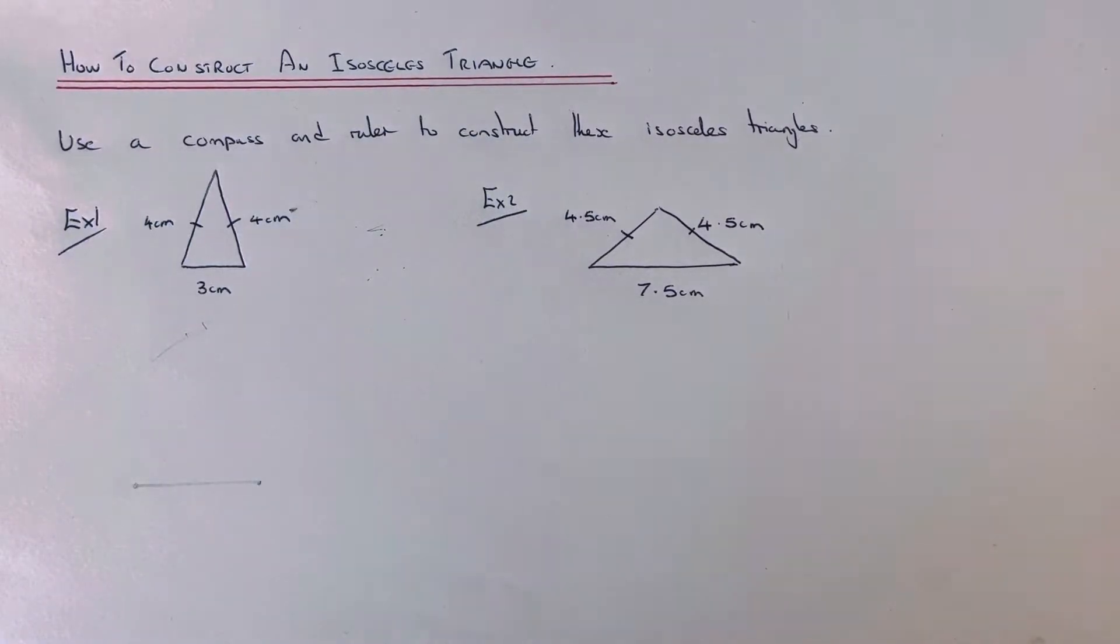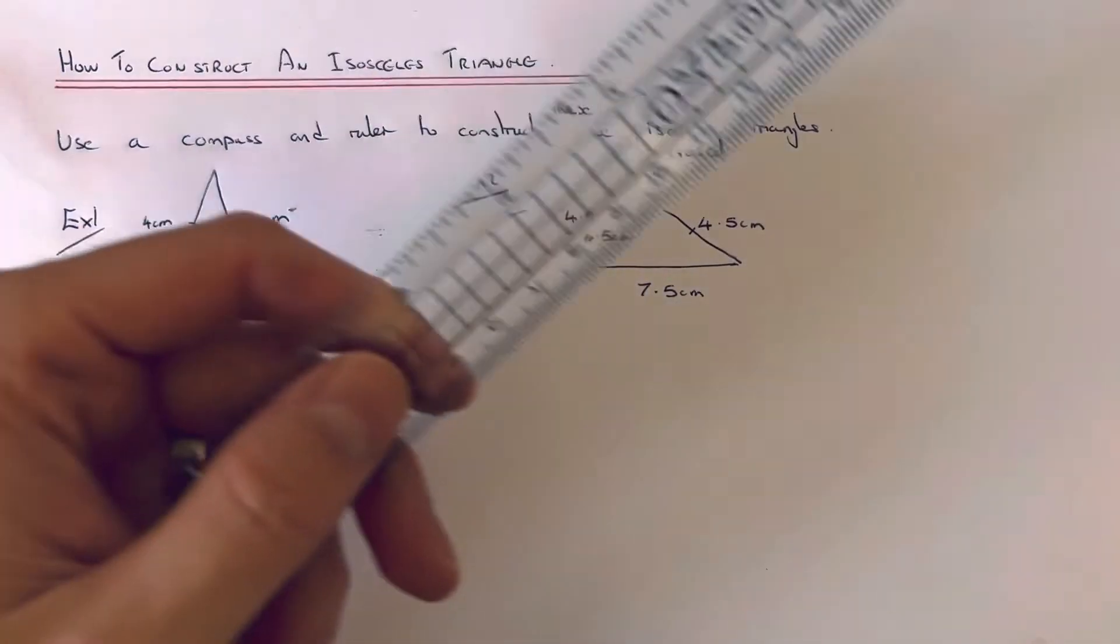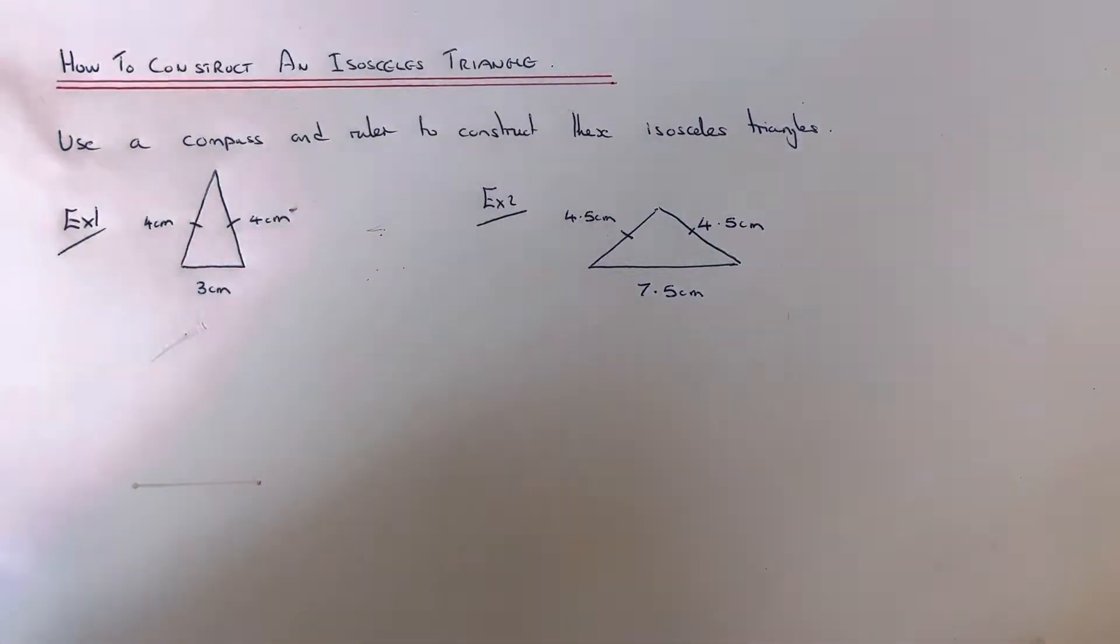Hi guys, welcome back. This is Maths 3000. Today I'm going to show you how to construct an isosceles triangle using a compass and a ruler. An isosceles triangle is a triangle with two equal sides and two equal angles.